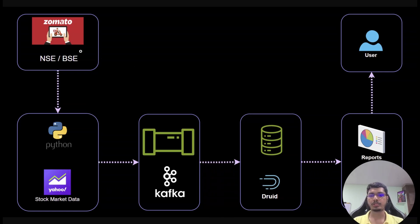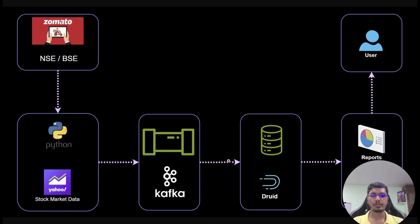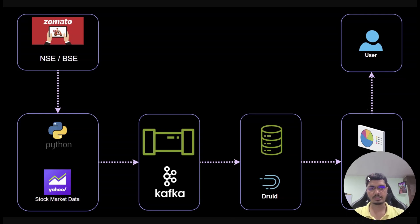The flow is going to be: Zomato's data is going to be picked up by Yahoo. Yahoo has its own API called yfinance, and using Python we are going to read and pull that data and push it into Kafka. From Kafka we are going to move it to Druid, and from Druid we are going to analyze it in Apache Superset.